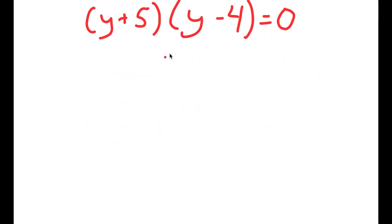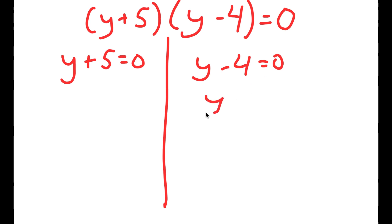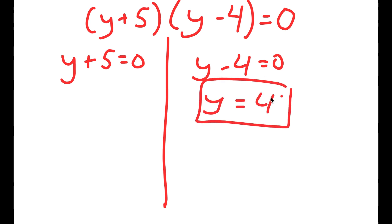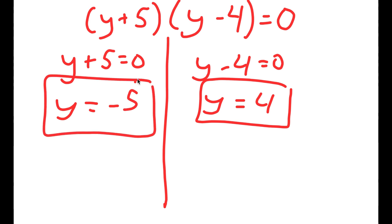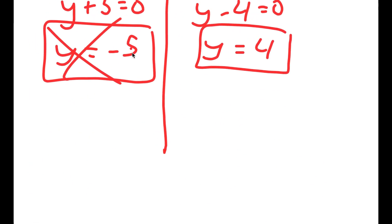This gives me two equations: y plus 5 equals 0, and y minus 4 equals 0. So y equals 4, and y equals negative 5. Now, because negative 5 is negative, this is not possible — because y is equal to x to the power of x, and you can't take the power of a negative number and make it positive.